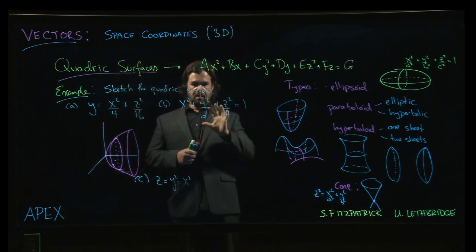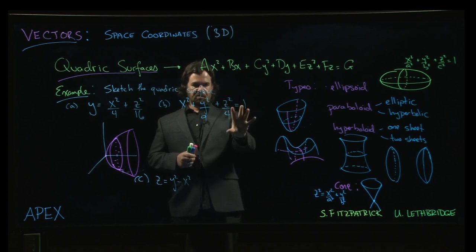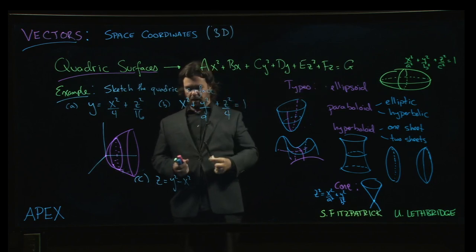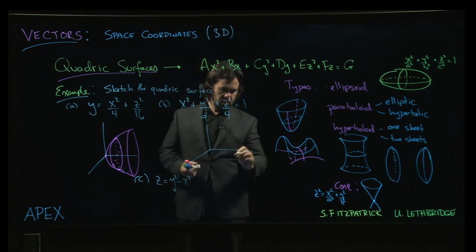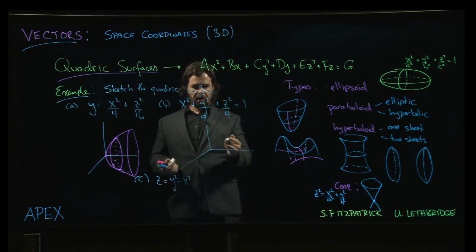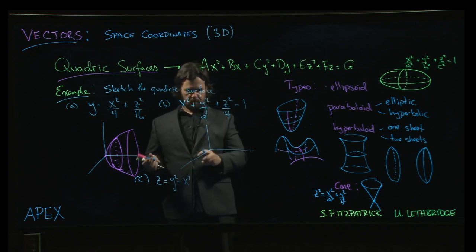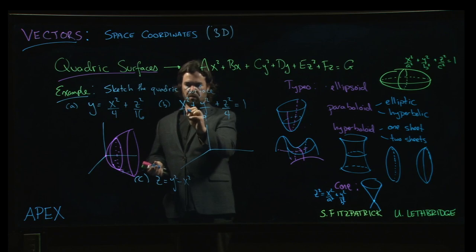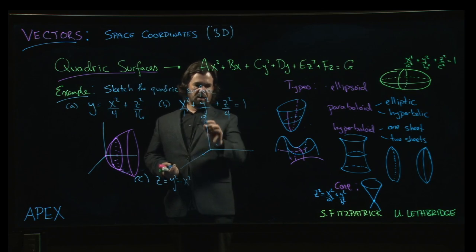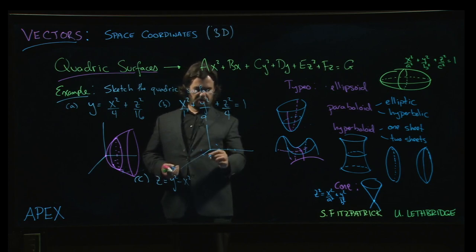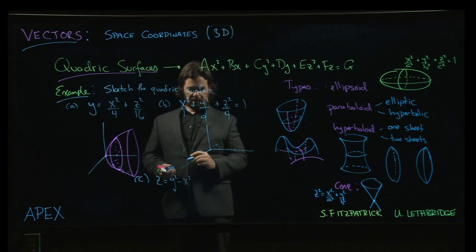Now, coming over to this one, it helps if you recognize this is an ellipsoid. And so the trick for drawing an ellipsoid is very much like drawing an ellipse where you look at the values here and you say, in the x direction, it's x squared over 1 squared if you like. So I can go one unit either way in the x direction. I can go one, two, three units either way in the y direction and I can go two units in the z direction.